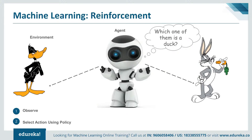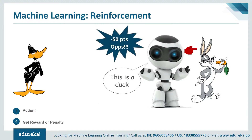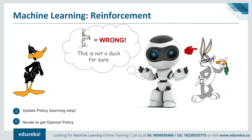Another example: we have an agent who must judge from the environment which of two things is a duck. First the agent observes the environment, then selects an action using some policy. If the machine makes a wrong decision — say, choosing a bunny as a duck — it gets a penalty, for example minus 50 points for a wrong answer. The machine then updates its policy, and this continues until the machine gets an optimal policy. From the next time, the machine will know that a bunny is not a duck.